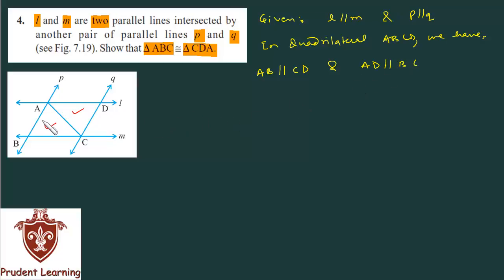This quadrilateral has two opposite sides AB and CD as well as BC and AD that are parallel. Which implies both pairs of opposite sides are parallel, and that's why quadrilateral ABCD is a parallelogram.